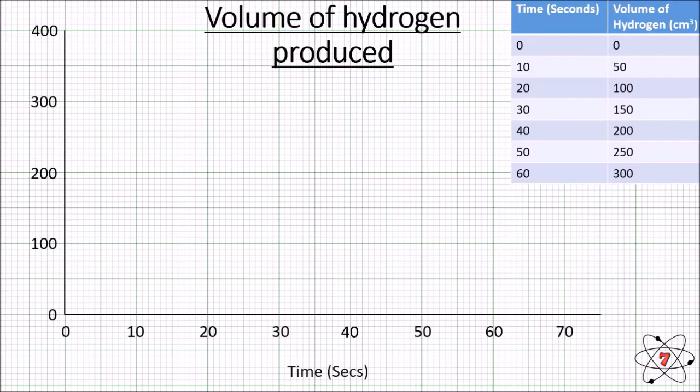So, we write our title. We plot time along the bottom, along our x-axis. We include our units. We put our numbers in, all evenly spread. Along the y-axis, we put the volume of hydrogen. We put our units. We put our numbers evenly spread. We now need to plot our points. Now, the first one is very easy. Zero seconds have passed and the volume of hydrogen is zero. So, it goes to a point called the origin, which is zero, zero.